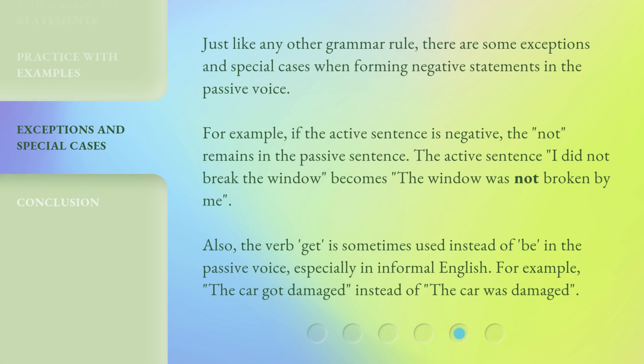Just like any other grammar rule, there are some exceptions in special cases when forming negative statements in the passive voice. For example, if the active sentence is already negative, the 'not' remains in the passive sentence. The active sentence 'I did not break the window' becomes 'the window was not broken by me.' Also, the verb 'get' is sometimes used instead of 'be' in the passive voice, especially in informal English — for example, 'the car got damaged' instead of 'the car was damaged.'